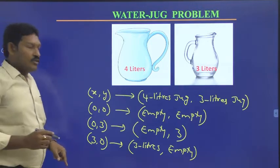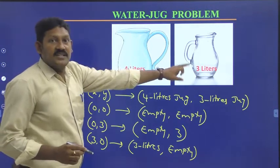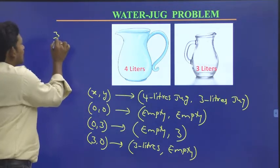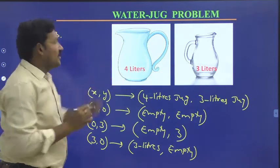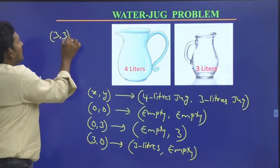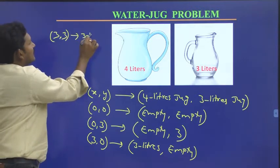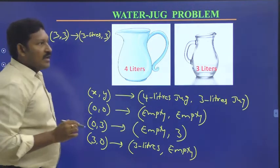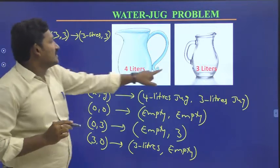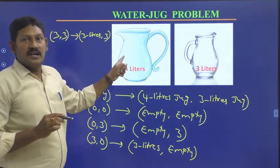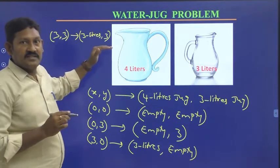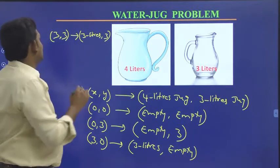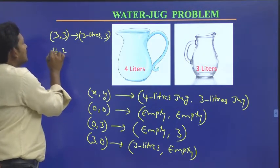The four liter jug consists of three liters of water and the three liter jug is empty. Now fill the three liter jug again with three liters of water. Next, pour this three liters into the four liter jug. Since the four liter jug already has three liters, it can only accommodate one more liter. So you pour that one liter in — now the four liter jug is full at four liters and the three liter jug has two liters remaining.